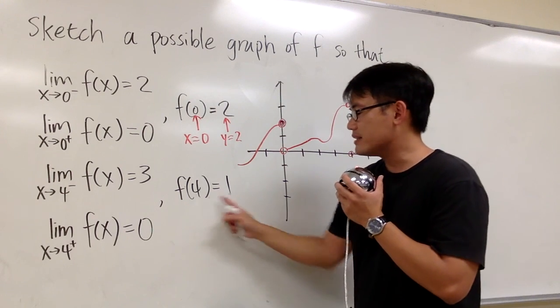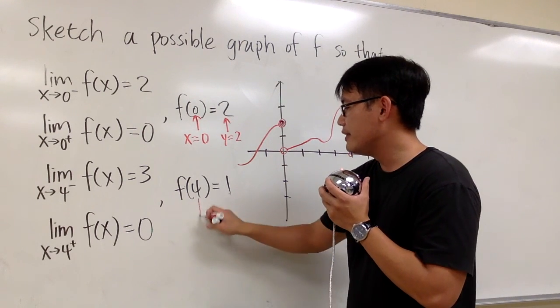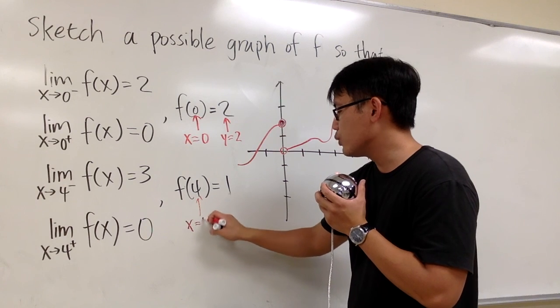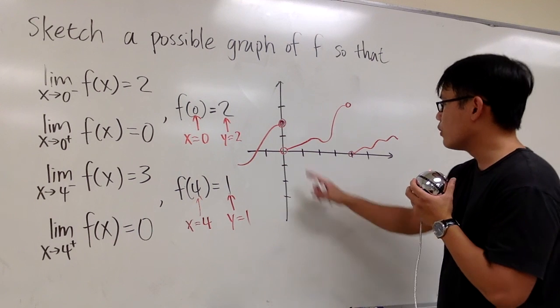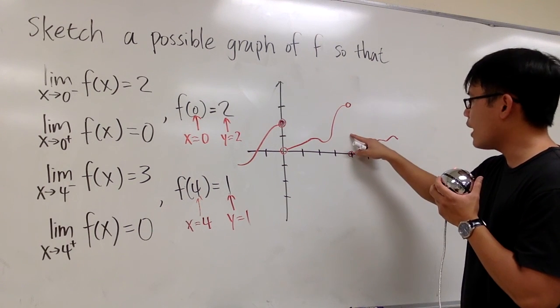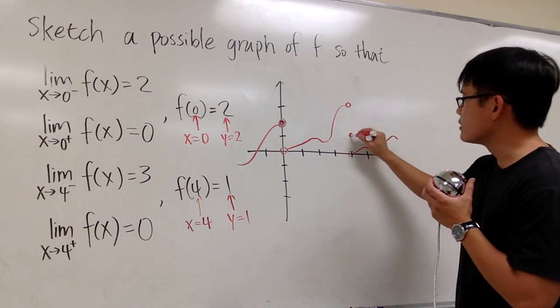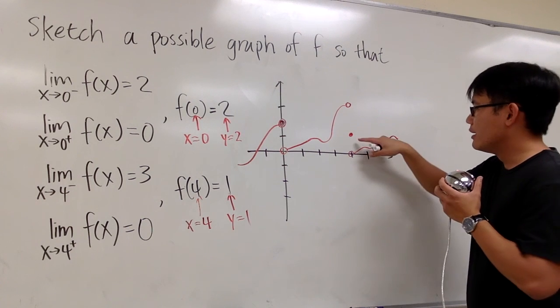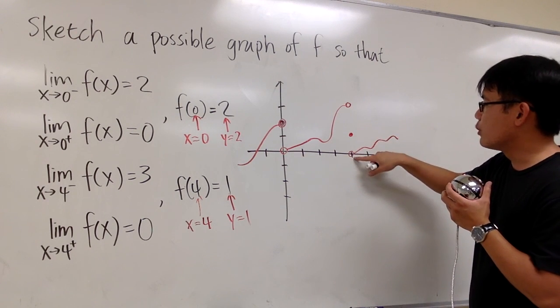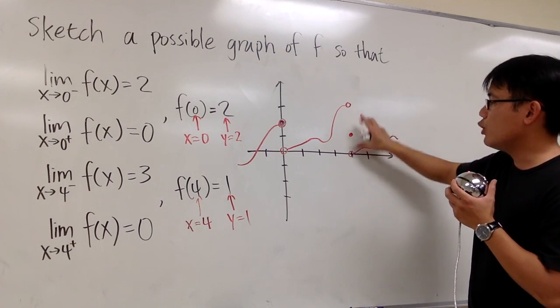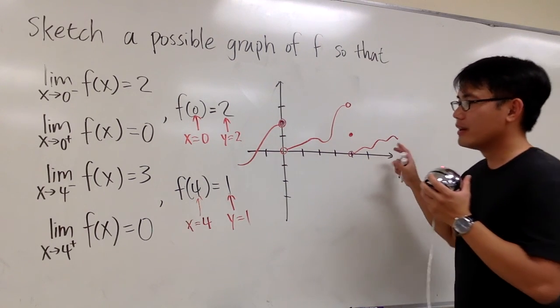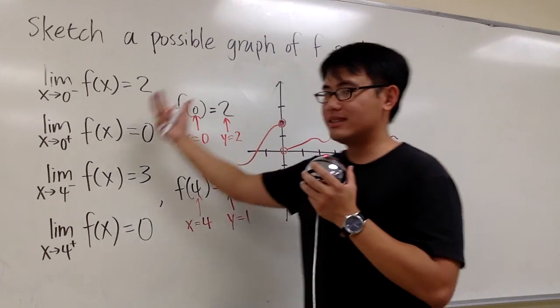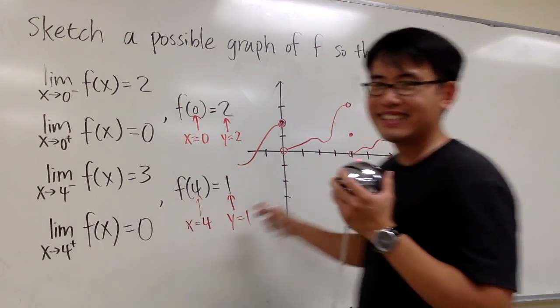And then, for this statement, f of four is equal to one. That tells us that, when x is equal to exactly four, the y value is exactly one. So I'm going to go four comma one. And I'm going to put down a solid dot. But then, this dot is neither this open circle nor that open circle, so these two open circles remain to be open. And with this right here, it concludes all these six conditions. That's it.